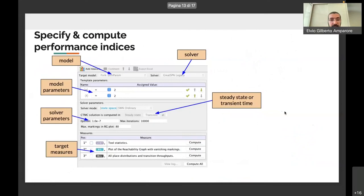The third step consists of specifying and computing the performance indices, and this is done with this interface in which one specifies the model and one of the available solvers. Then models can be parametric, so we can instantiate the model parameters. Solvers are also parametric, and then we instantiate the solver parameters. In particular, we typically set if we want the solution steady state or transient time, and finally we specify a set of target measures that are computed by this solver invocation. There are several possible types of measures that can be computed.